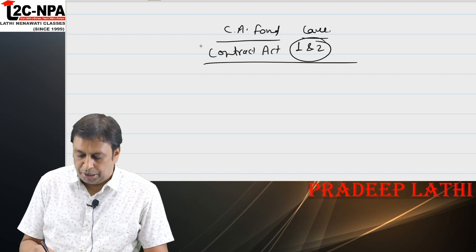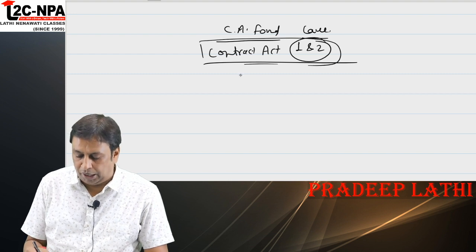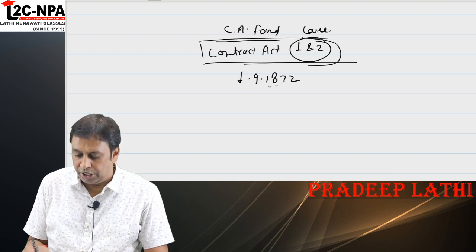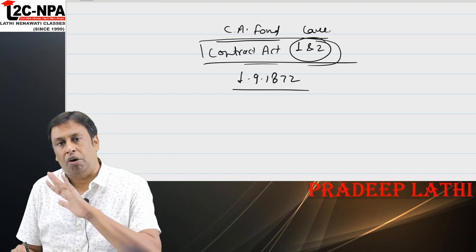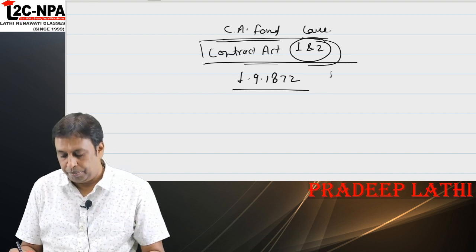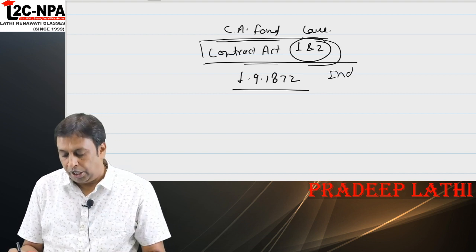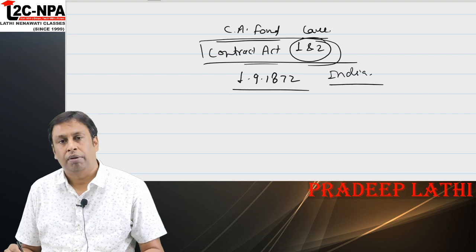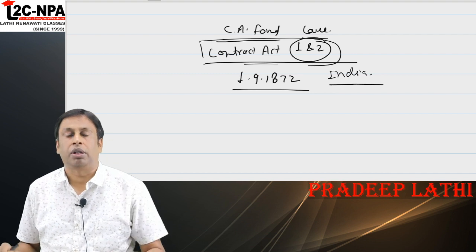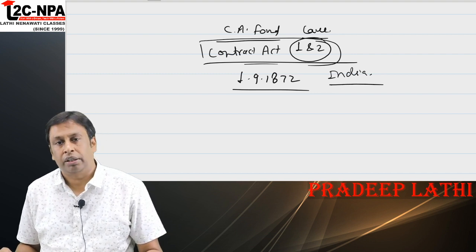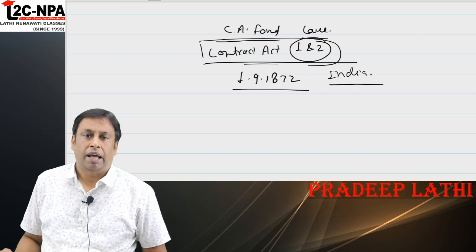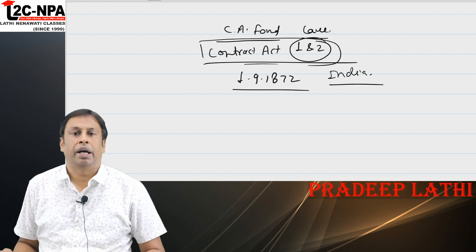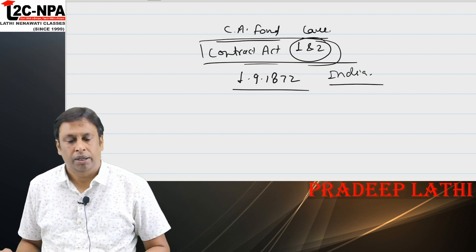When was the Contract Act enacted in India? It was enacted on 1st September 1872, and this act is applicable in all of India including Jammu and Kashmir.